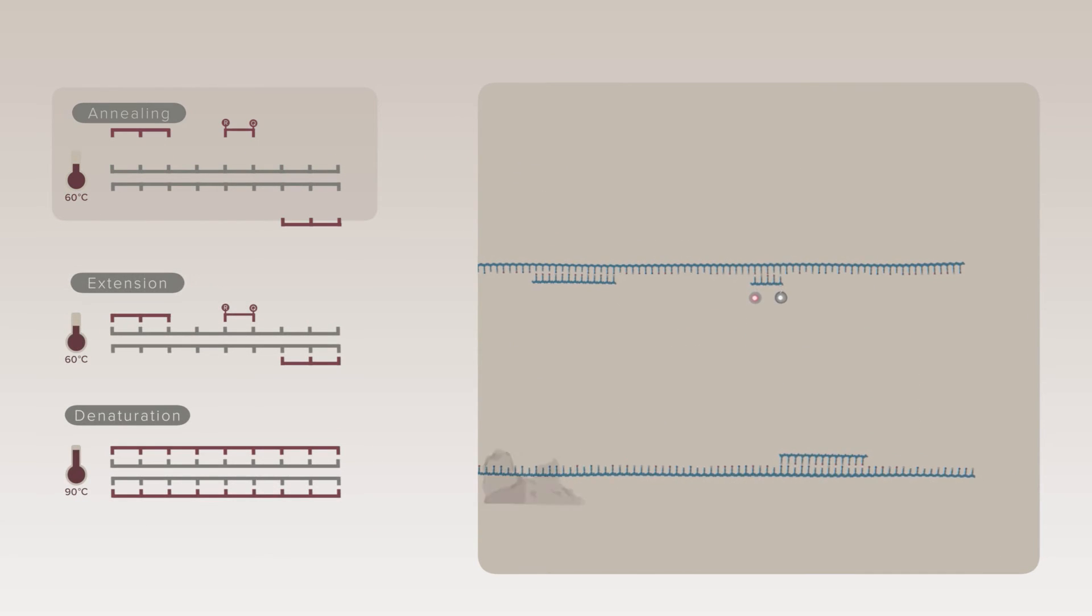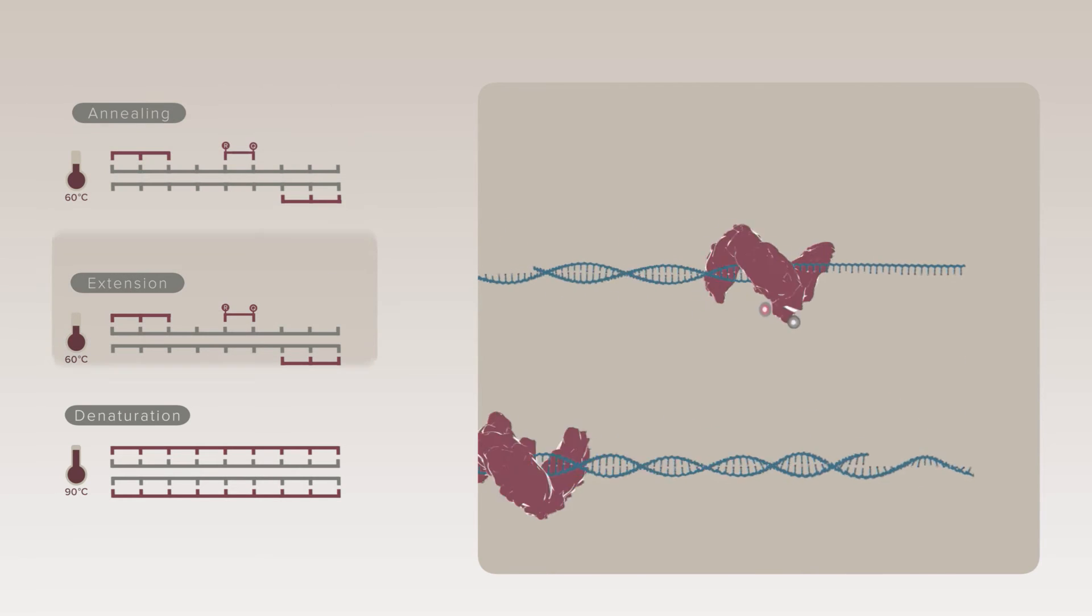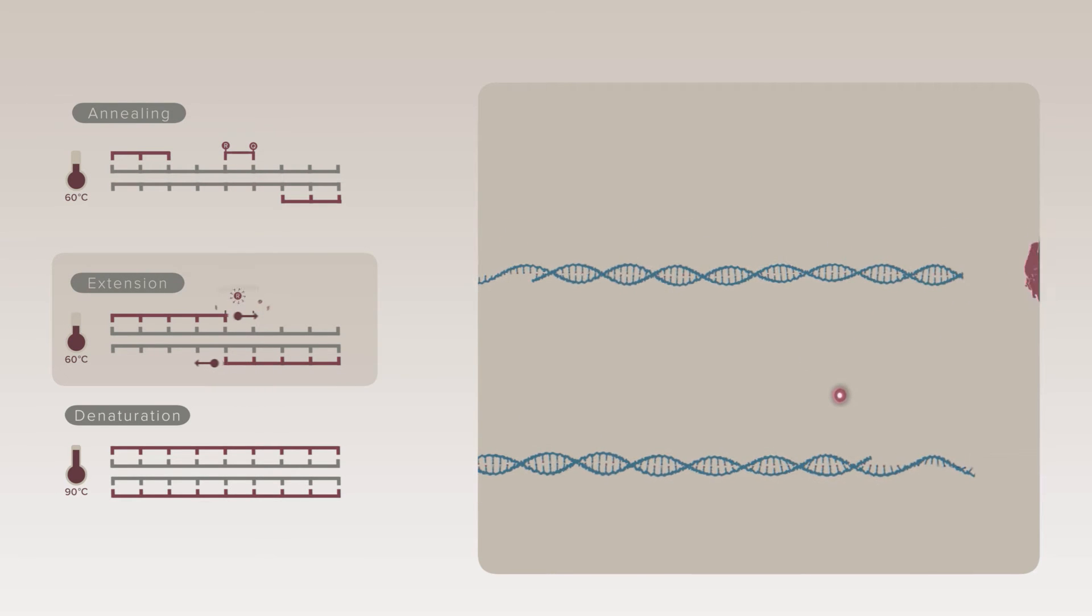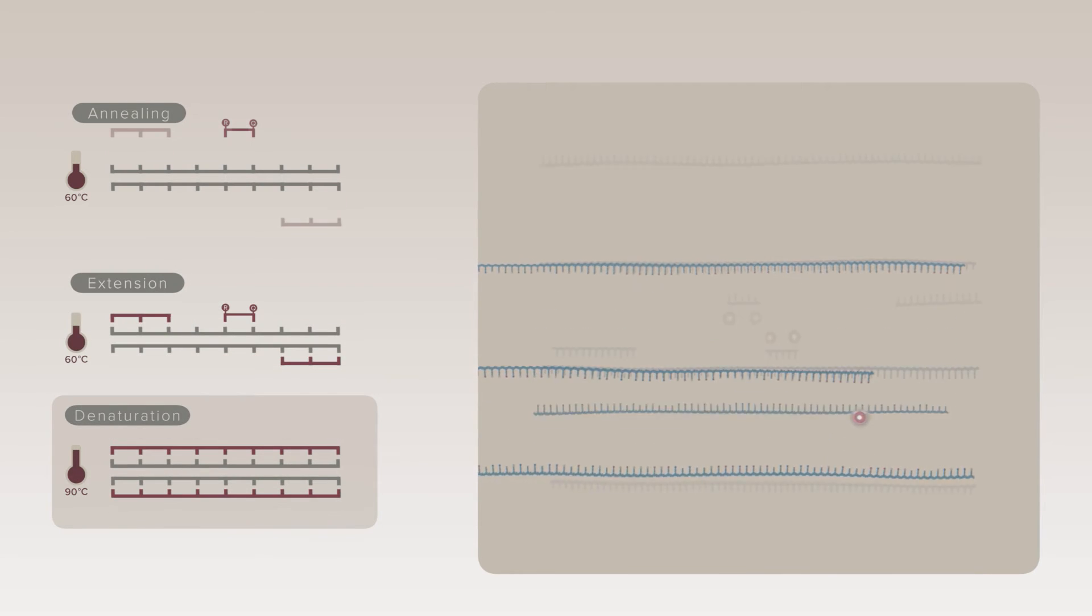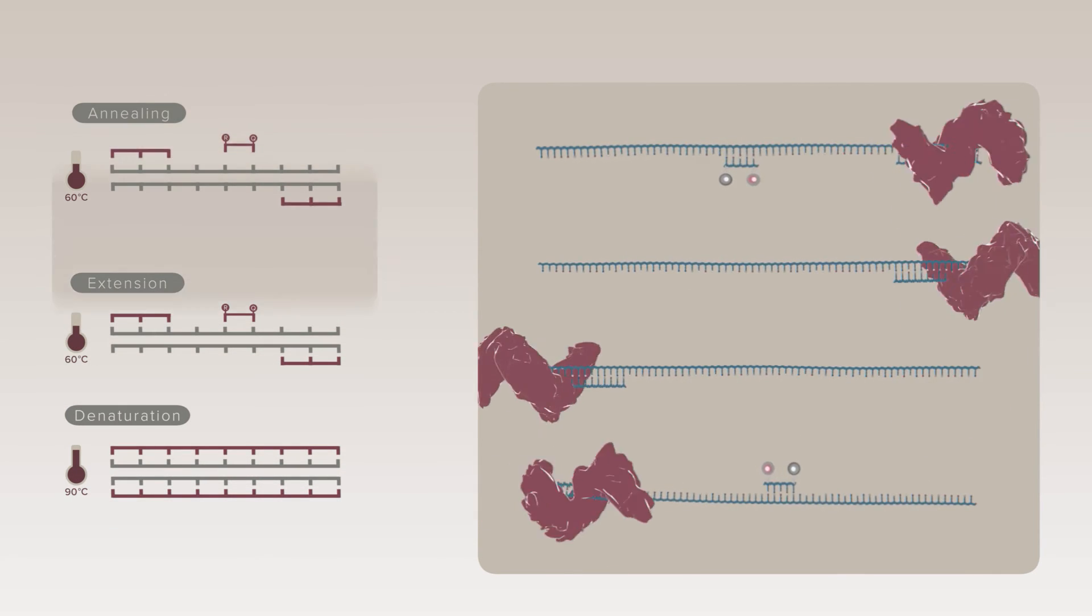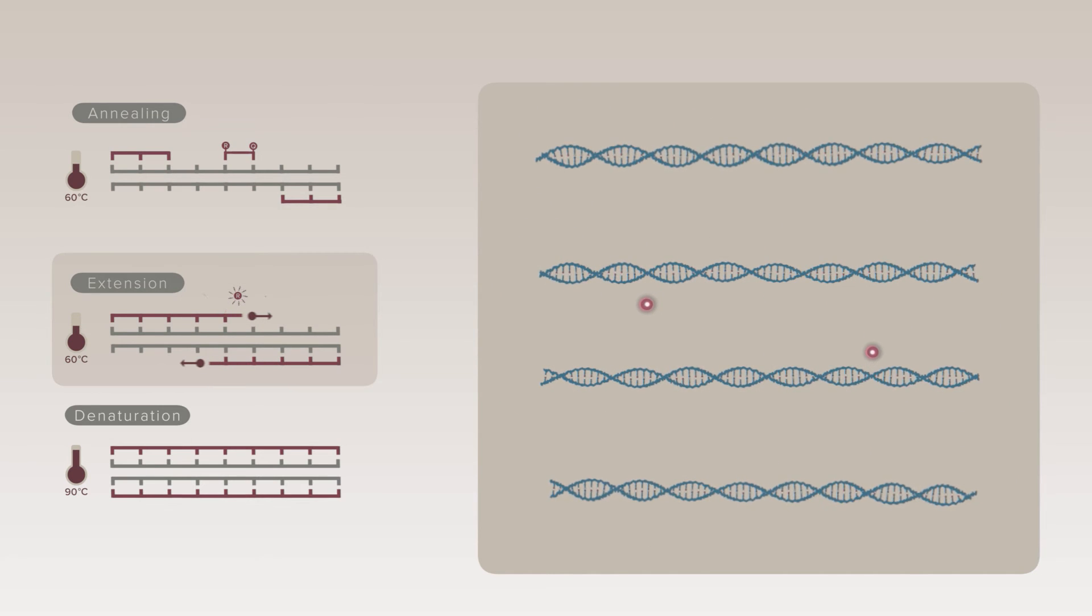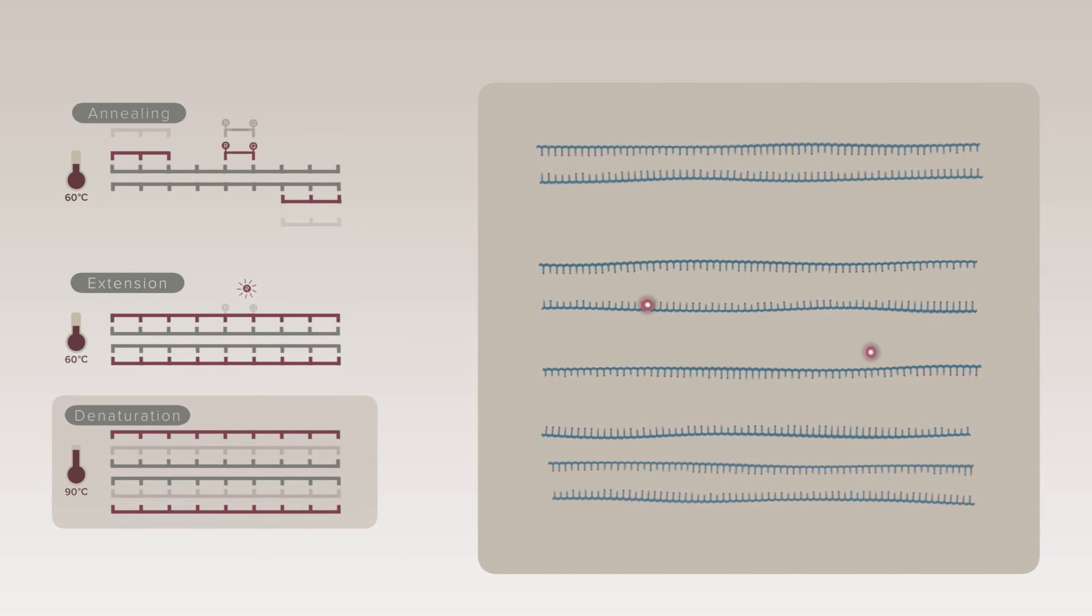On the second cycle, a second primer attaches itself to a lower section of the biomarker. After a few replication cycles, the newly formed fragment of DNA containing the biomarker of interest is isolated and replicates exponentially in subsequent cycles.